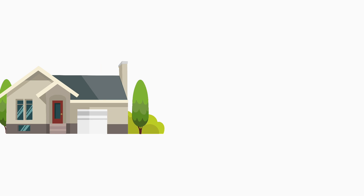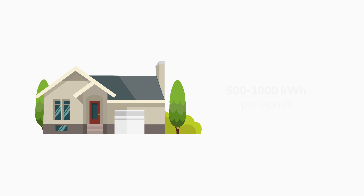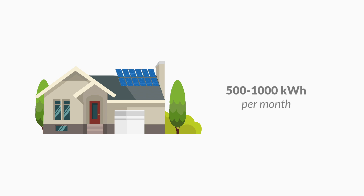To put this in perspective, the average home uses between 500 and a thousand kilowatt hours per month. Now when you go solar, the amount of energy your solar system produces is also going to be measured in kilowatt hours.